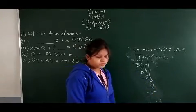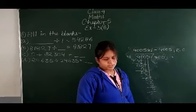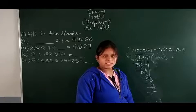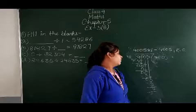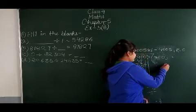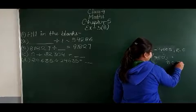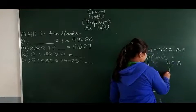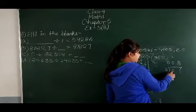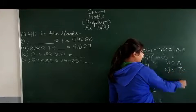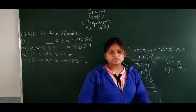Property number 2: If 0 is divided by any number, then the quotient and remainder are 0. For example, if I have 0 divided by 8, then the quotient and remainder will both be 0.